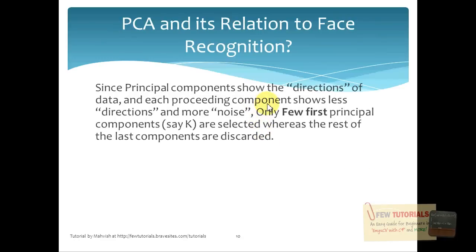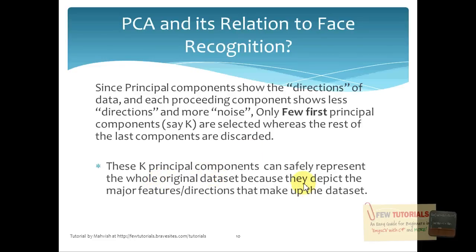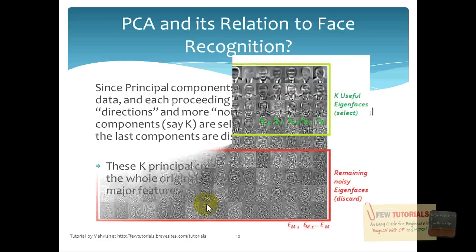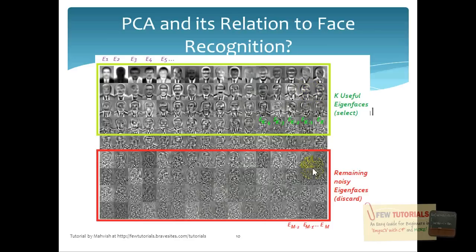Since principal components — eigenfaces — show the directions of the data, and each succeeding component shows less direction and more noise, only a few first principal components, say K total, are selected whereas the rest of the last components are discarded. These K principal components can safely represent the whole original data set because they depict the major features and directions that make up the data set. Looking at the eigenfaces we calculated after reducing dimensionality, we could actually select only the most useful K eigenfaces. They are selected heuristically by artificial intelligence methods and similar approaches.